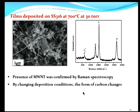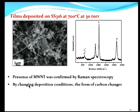The Raman spectrum shows the signature of multi-walled carbon nanotubes along with a signature of iron oxide Fe3O4, which are the particles seen in the micrograph. So you have the simultaneous formation of Fe3O4 and multi-walled carbon nanotubes by this kind of process.